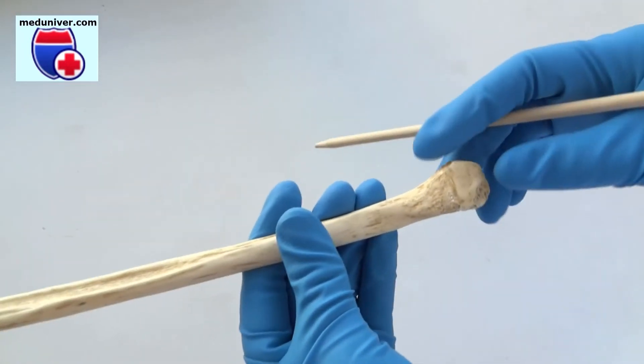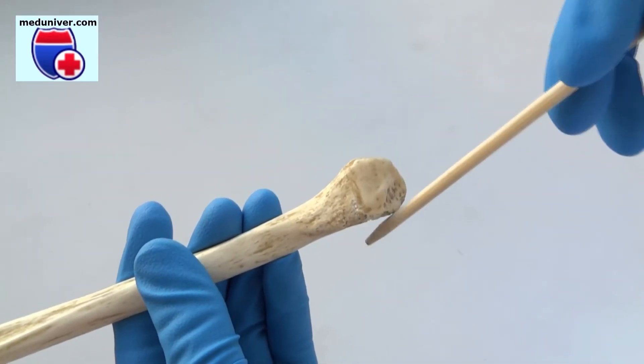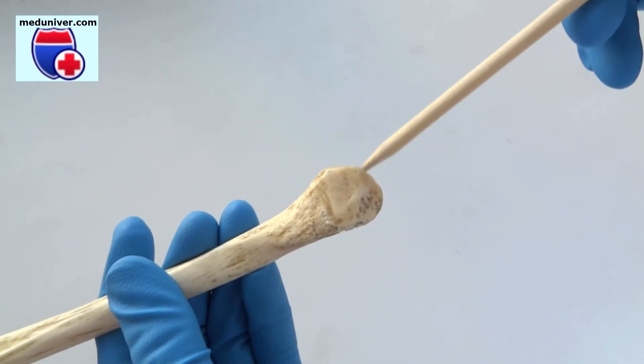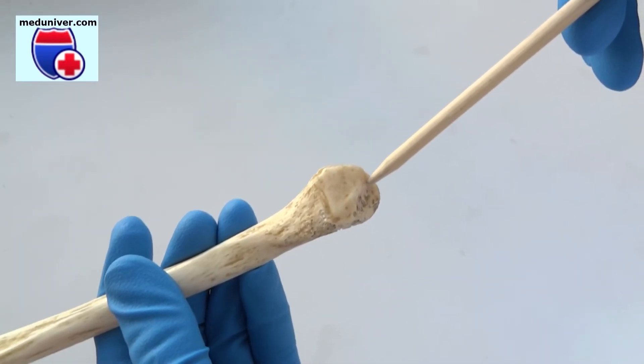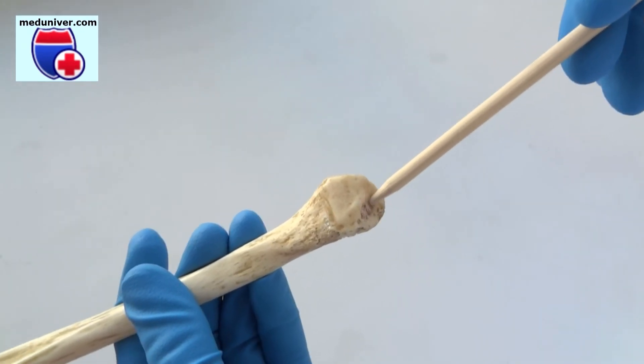On the distal epiphysis is located the lateral malleolus, malleolus lateralis, on which is located the malleolar articular surface, facies articularis malleoli lateralis, and malleolar fossa of lateral malleolus.